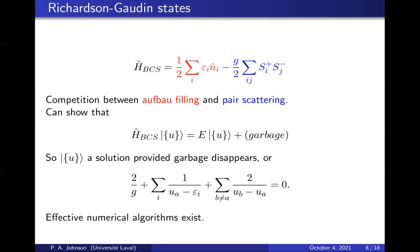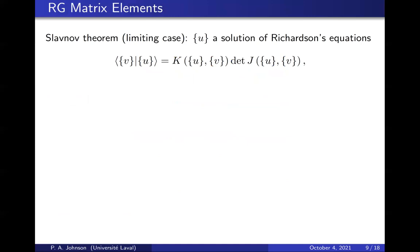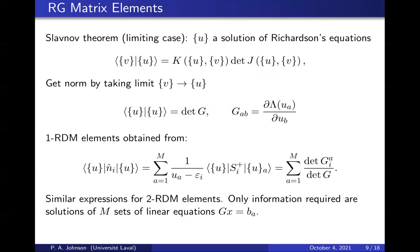Once you have that, you will need to construct its density matrix, specifically its one and two body density matrices. You do that with some results that are very clean. The scalar product between any two RG-state eigenvectors is just a determinant scaled by a factor. Its norm you get by the limit as the two sets of numbers are the same. It becomes the determinant of a specific matrix that has a physical interpretation. The 1RDM elements are very clean. You get them from a sum of ratios of determinants that differ by a single column, which you compute very simply by solving a set of linear equations.